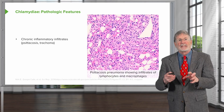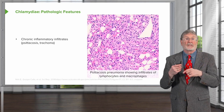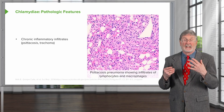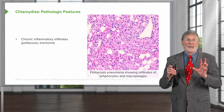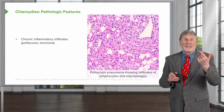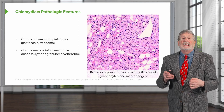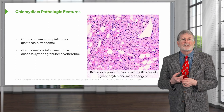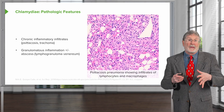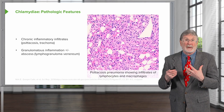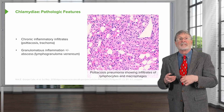The pathologic features: remember, this is an obligate intracellular pathogen. The only way we can really deal with it effectively is to have chronic inflammatory infiltrates, such as T cells and NK cells, to try to keep it in check. That's what happens in psittacosis and trachoma. In lymphogranuloma venereum, we also bring in a substantial component of activated macrophages, which is why you get granulomatous inflammation in that setting. So it's mostly a chronic inflammatory response.